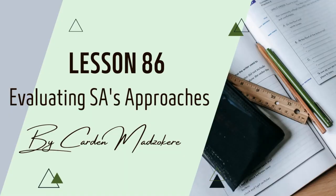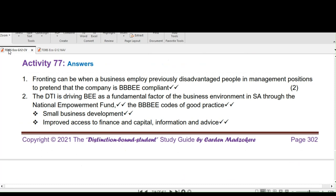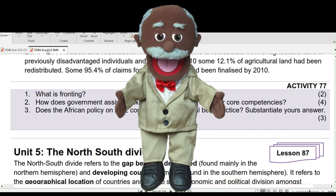Question 1: What is fronting? Fronting in an economic context is when a business employs previously disadvantaged people in management positions to pretend that the company is BBBEE-compliant. Please take note of the word 'pretend' — the business wants it to look like they comply, but it's not really the case because they are just putting a puppet in front, and that puppet in this case happens to be black.